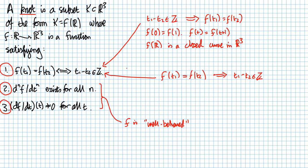Now what does the second part of condition number 1 tell us? It says that if F of T1 is equal to F of T2, then T1 minus T2 is an integer. In other words, in terms of this closed curve here, it tells us that the closed curve F of R does not cross itself. That's what it tells us.